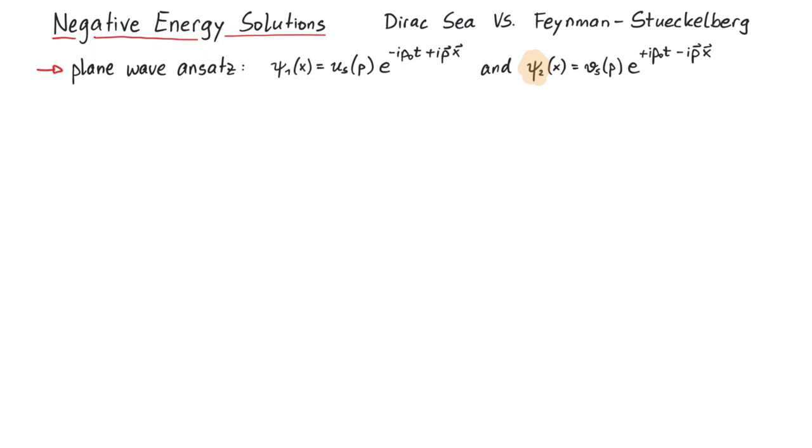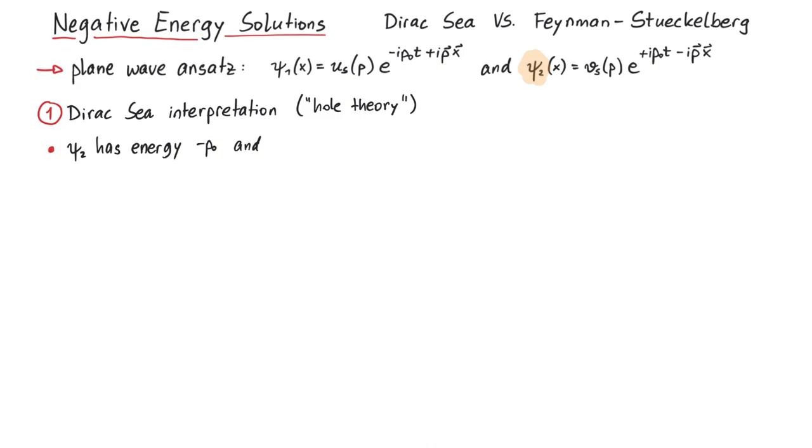Let's now talk about two interpretations of the state psi_2. First, the Dirac-Sea interpretation, also known as hole theory. It states that psi_2 really has energy minus p^0 and momentum minus p, but it is unobservable. We have to assume that all negative energy states in our universe are already filled, which is known as the Dirac-Sea.